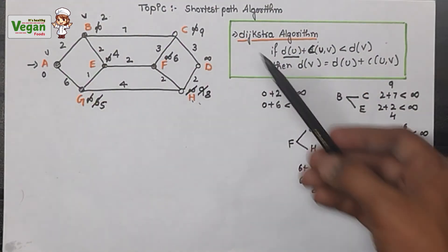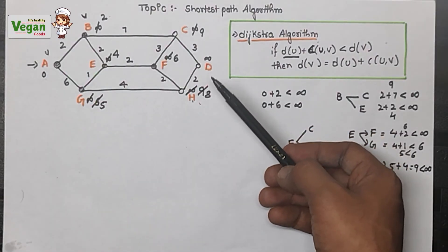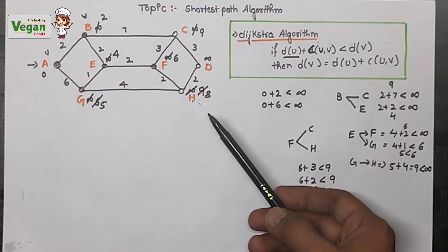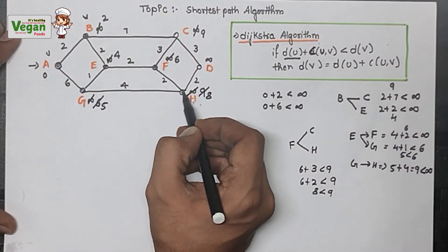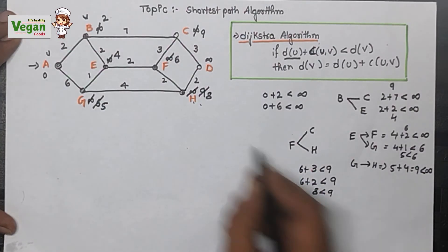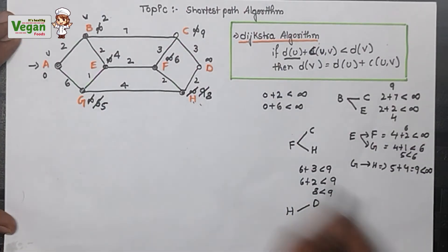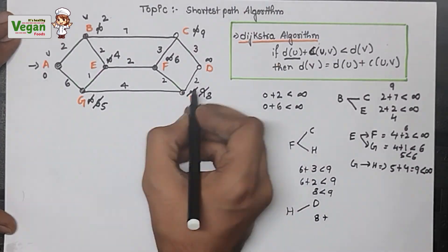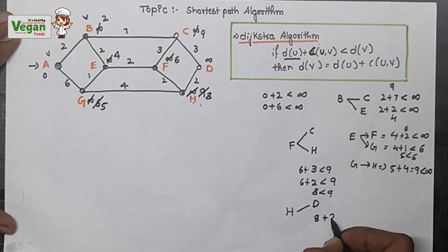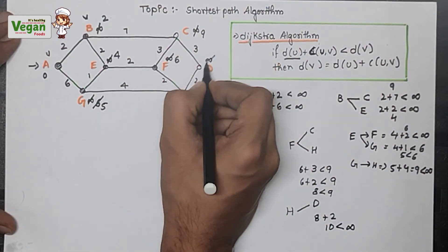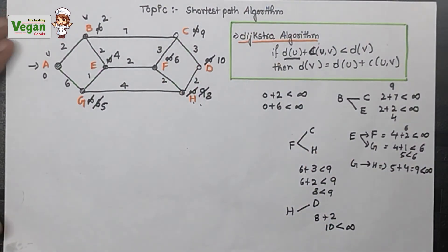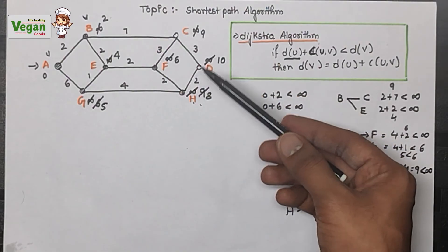Remaining routers are C = 9, D = infinity, and H = 8. The smallest is H with 8, so we select router H. From H we can go to D. H to D: H cost 8 + edge cost 2 = 10, which is less than D's value of infinity, so we strike out infinity and write 10 for D. Router H is now done.